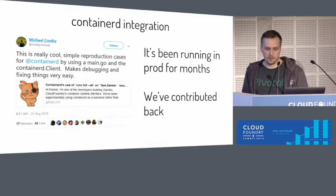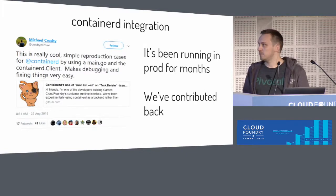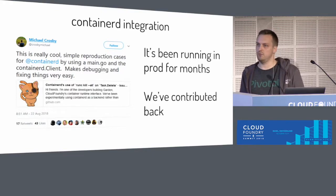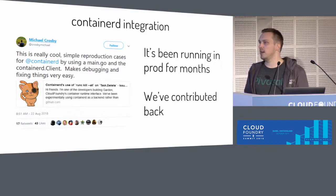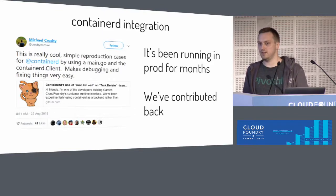That's been going pretty well. We've had a flavor of Garden running in production — a large Cloud Foundry production — for a couple of months now, and it's actually been surprisingly stable and relatively bug-free. It has exposed a few issues with Garden and a few issues with containerd itself, which has given us a chance to contribute back to the community more. In the past couple of months we've actually had a pair dedicated to just working on open-source technology that we happen to use — improving it, fixing bugs, adding features. It's been a really cool experience.